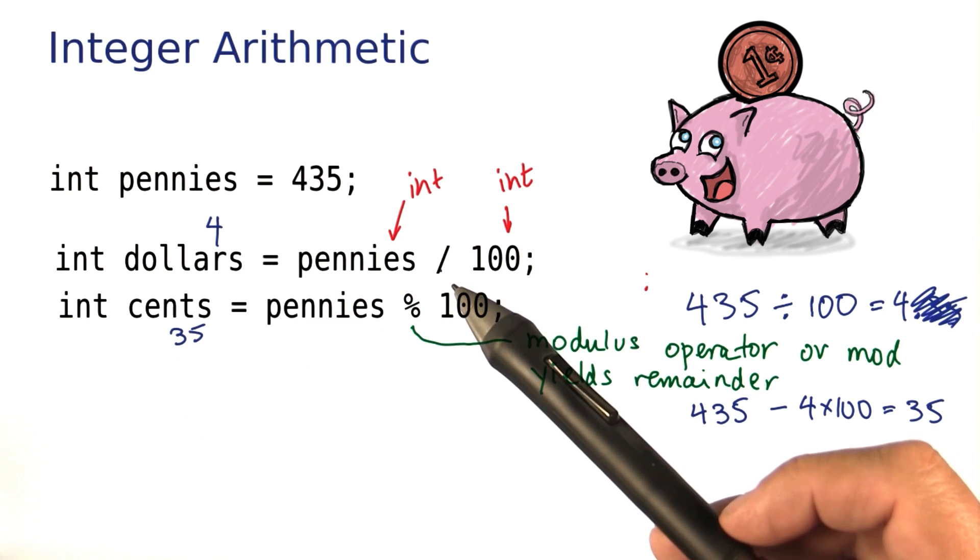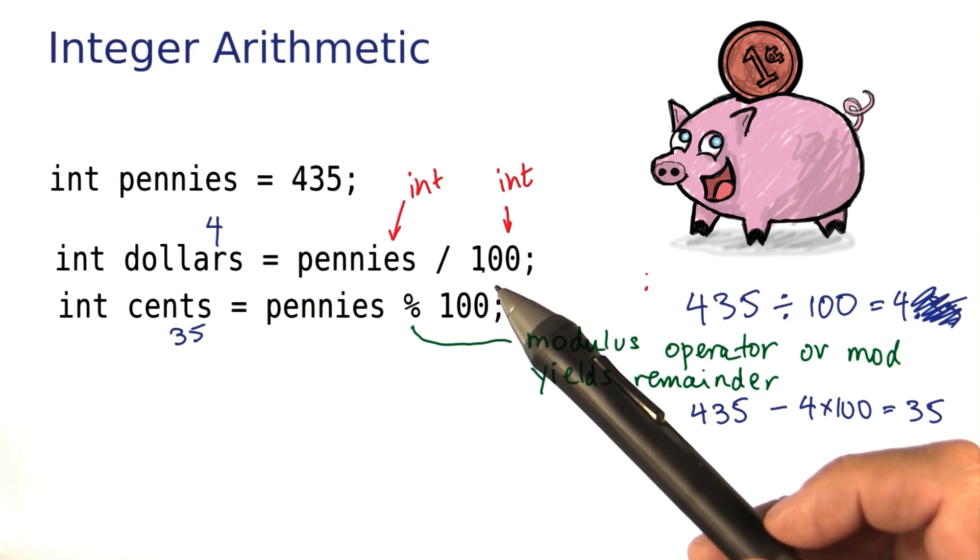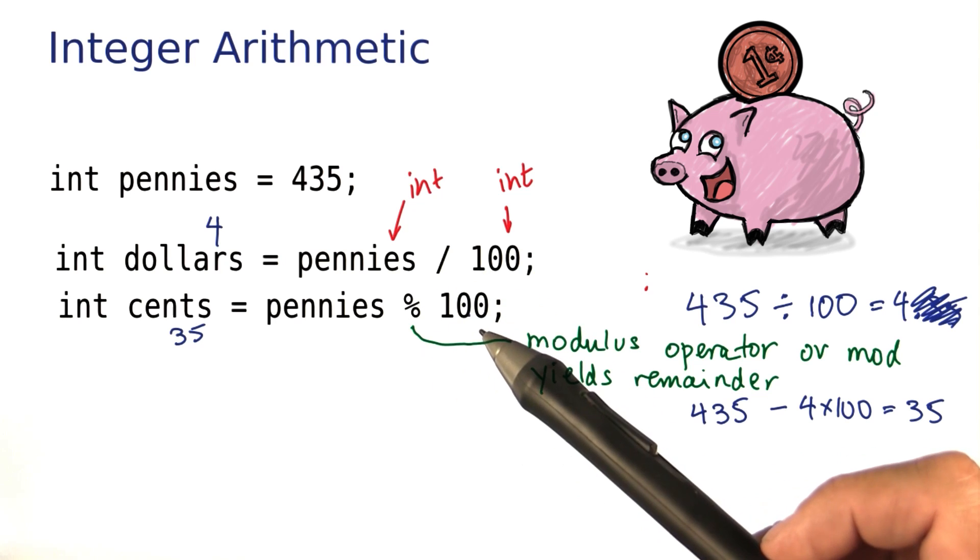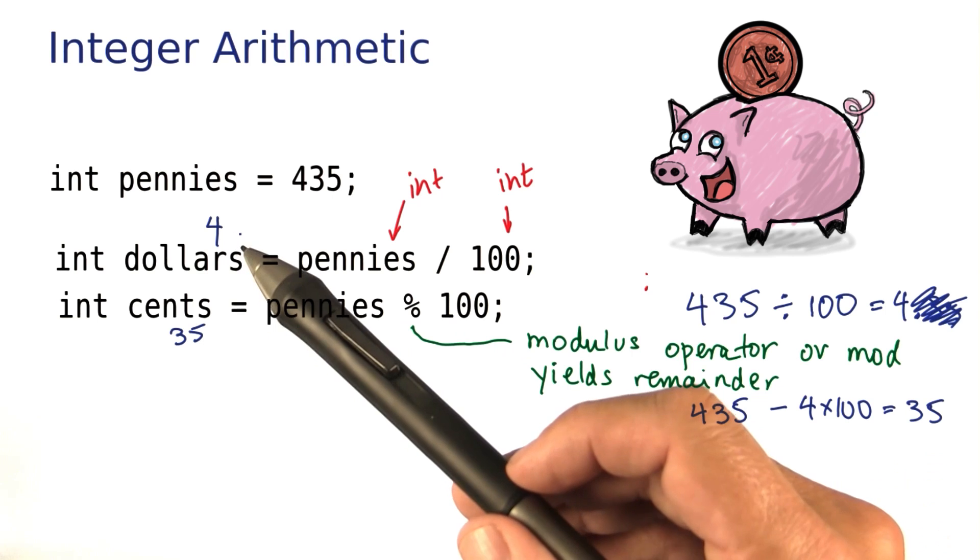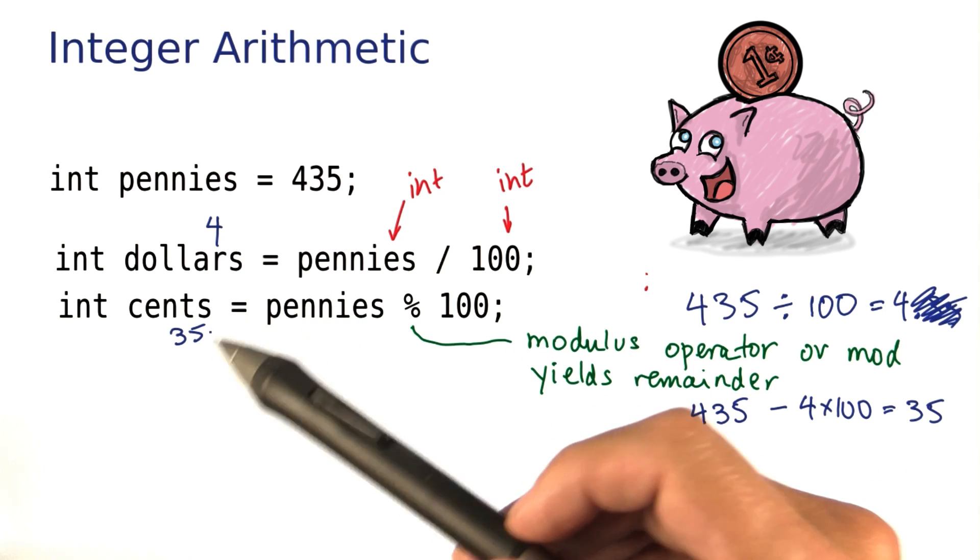So you can see that by making an integer division by 100, and then also a remainder operation with 100, we get the dollars and the cents value.